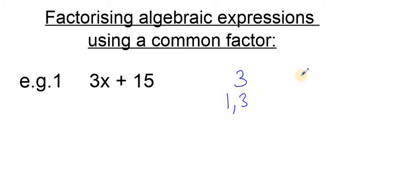Now 15, 15 can be made by 1 and 15. 2 doesn't work because 15 is odd. 3 can multiply with 5. We could try 4 and it won't work because again 15 is not even, and 5 we've already got that number there.